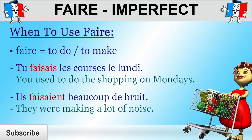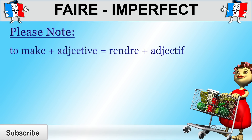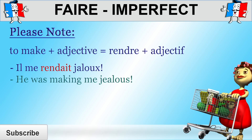Of course, depending on the context, this could also translate to they used to make a lot of noise or they made a lot of noise. However, if to make is followed by an adjective rather than a noun, you cannot use faire. Instead, you need to use rendre, as in that case nothing is actually being made. For example, il me rendait jaloux — he was making me jealous. Elle me rendait heureux — she was making me happy.